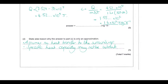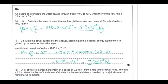Now looking at a flow-type temperature problem: an electric shower heats water with a given volumetric flow rate in metres cubed per second. To find the mass flow rate, multiply volumetric flow rate by density. The density of water is 1000 kg/m³, giving us the mass flow rate in kilograms per second.